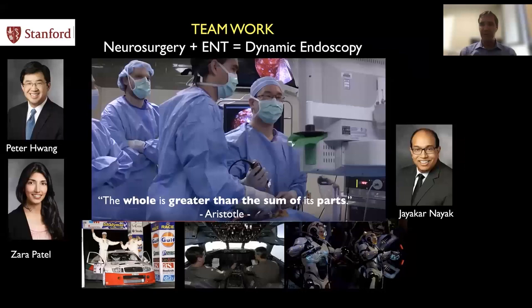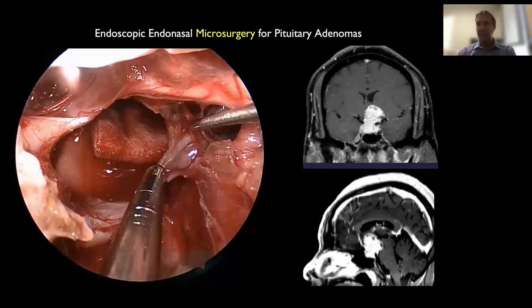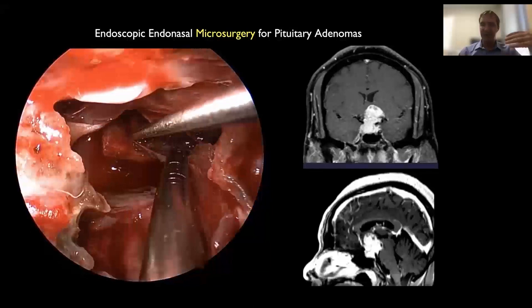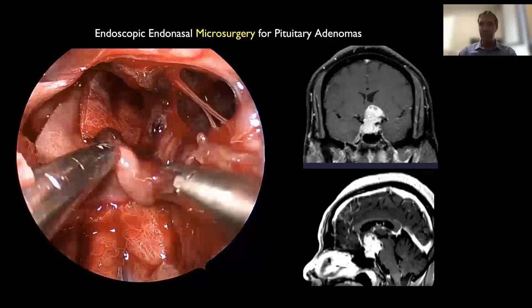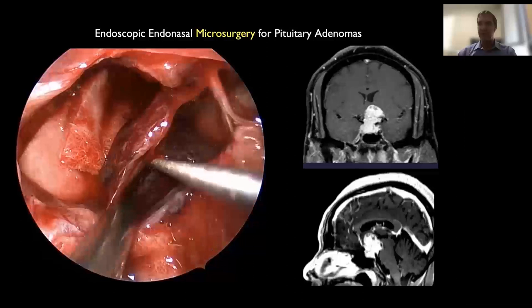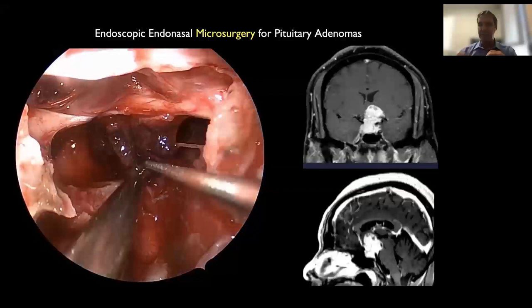Typically we do this operation with our ENT colleagues. They not only open the sinuses and help with closure, but they also drive the endoscope. While they drive the endoscope, we can use two hands to do the operation. It's dynamic endoscopy working together as a team, which makes an operation so much better than either working alone or with a holder. We can do the most complex tumors. Most pituitary tumors can be removed with an endonasal approach because we can do a wider exposure with excellent visualization, and we can even go into the brain space.